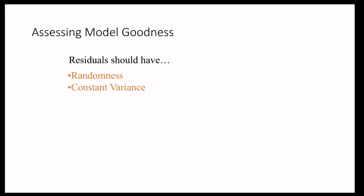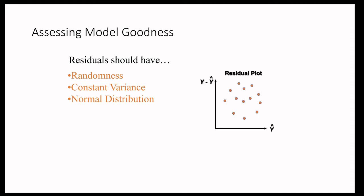One thing you always have to worry about is: how good is the model? This is known as assessing model goodness. We can assess goodness by looking at residuals — the difference between what you are getting and what you expected. These residuals should show certain properties: values should be randomly distributed, variance should be constant, and the distribution should be normal in nature. A residual plot should look like this.